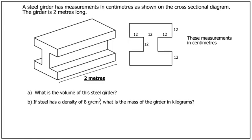In this first video we are going to see how to find the volume of a large prism in the form of a steel girder. A steel girder has measurements in centimetres as shown on the cross-sectional diagram. The girder is 2 metres long. Part A: what's the volume of this steel girder? And Part B: if steel has a density of 8g per cubic centimetre, what is the mass of the girder in kilograms?